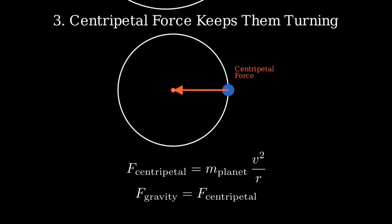When we set these forces equal to each other, we get an interesting result. The gravitational force, G times M_sun times M_planet divided by r squared, equals the centripetal force, M_planet times v squared divided by r. We can cancel M_planet on both sides and one factor of r. Solving for v, we get that the orbital velocity equals the square root of G times M_sun divided by r. This equation tells us exactly how fast a planet needs to move to maintain a stable orbit at distance r from the Sun.